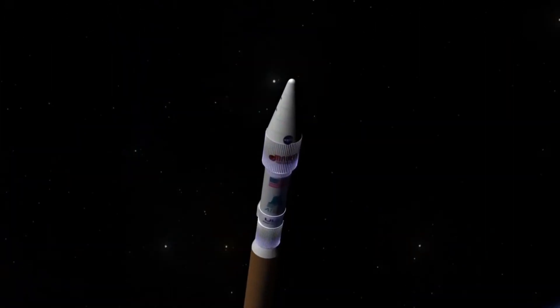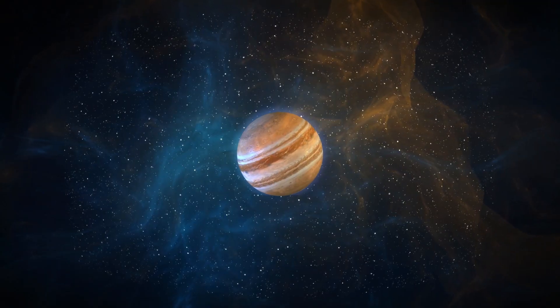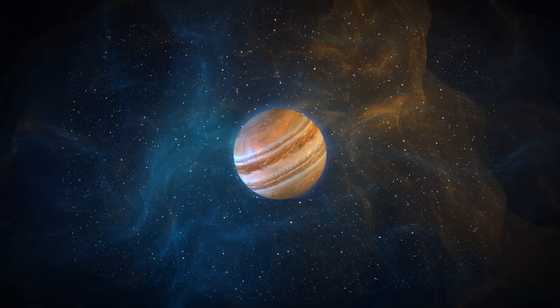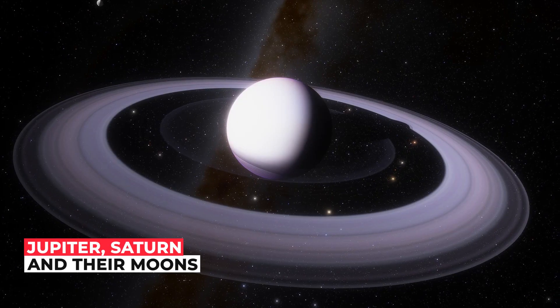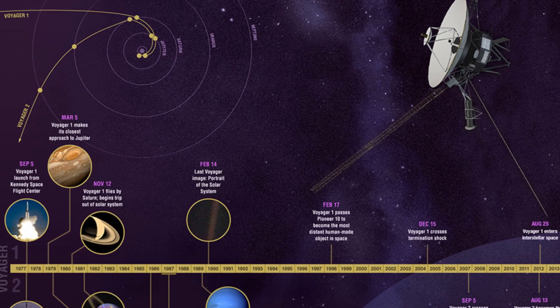This was a major undertaking. No human-made object had ever attempted such a journey before. The two spacecraft captured thousands of images of Jupiter, Saturn and their moons. In addition, we could see many things for the first time, thanks to the images from Voyager 1 and 2.